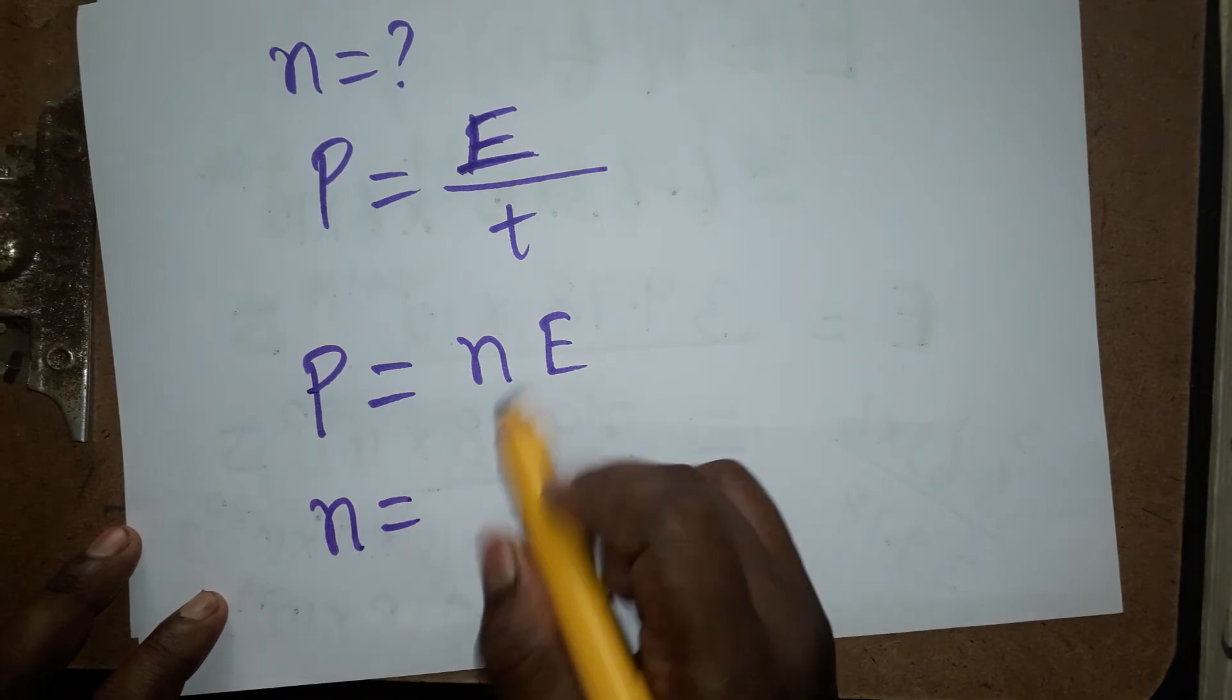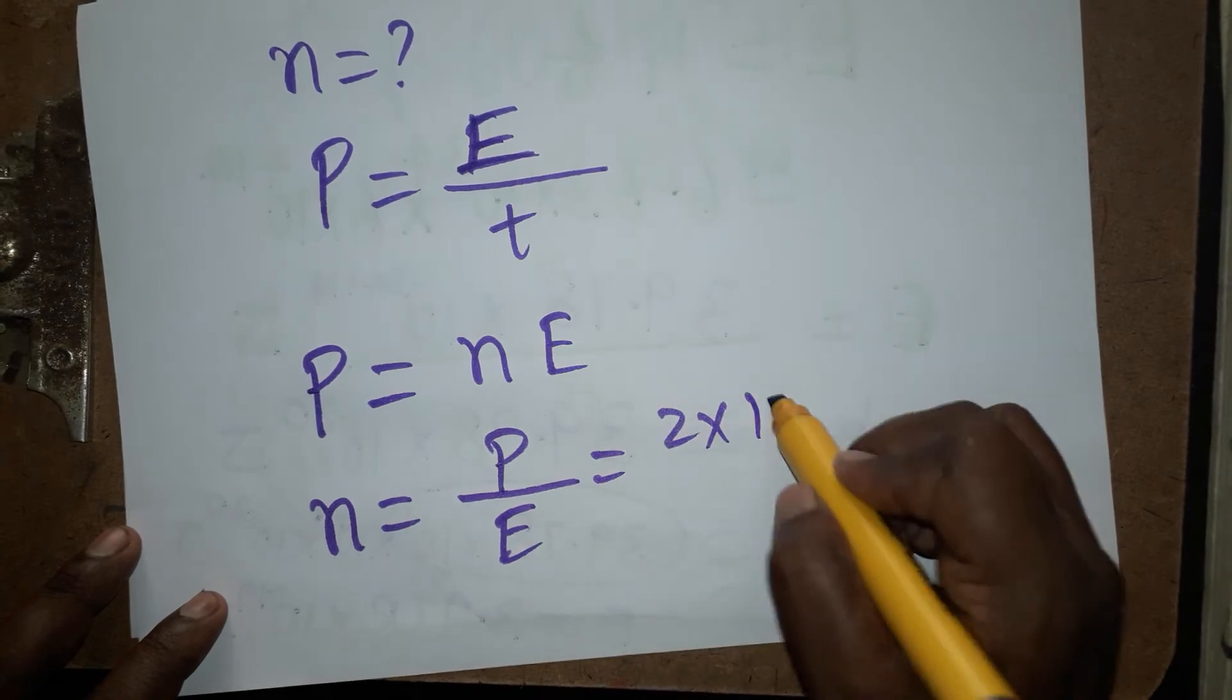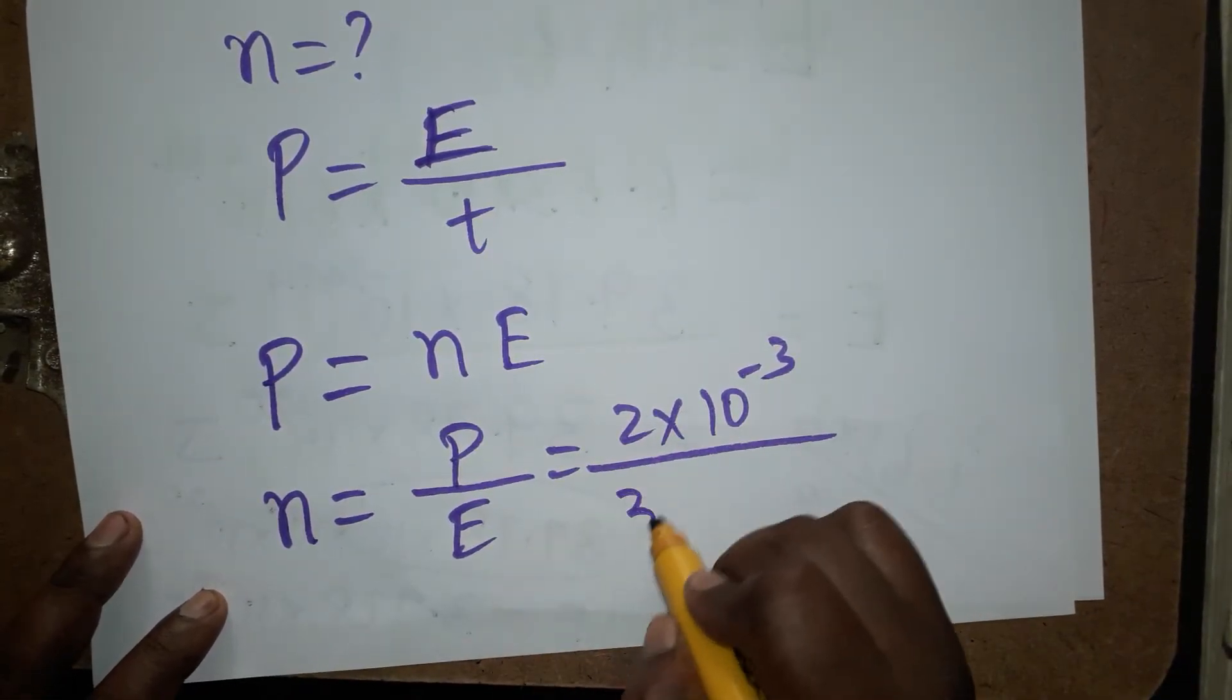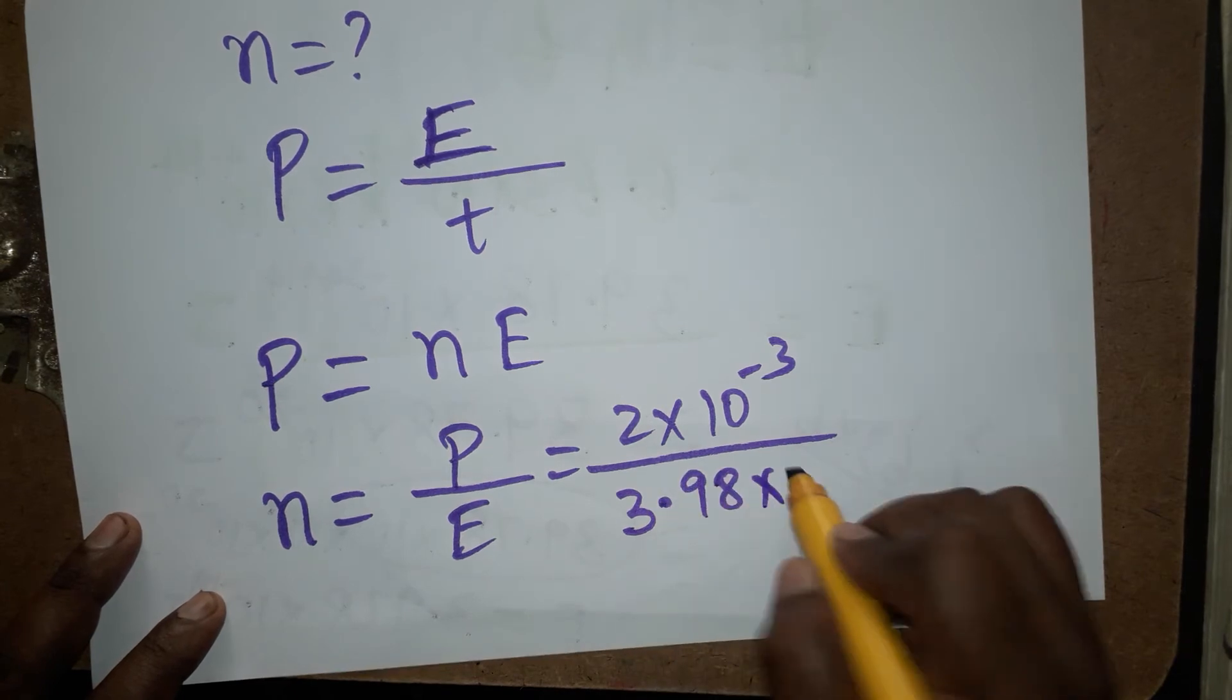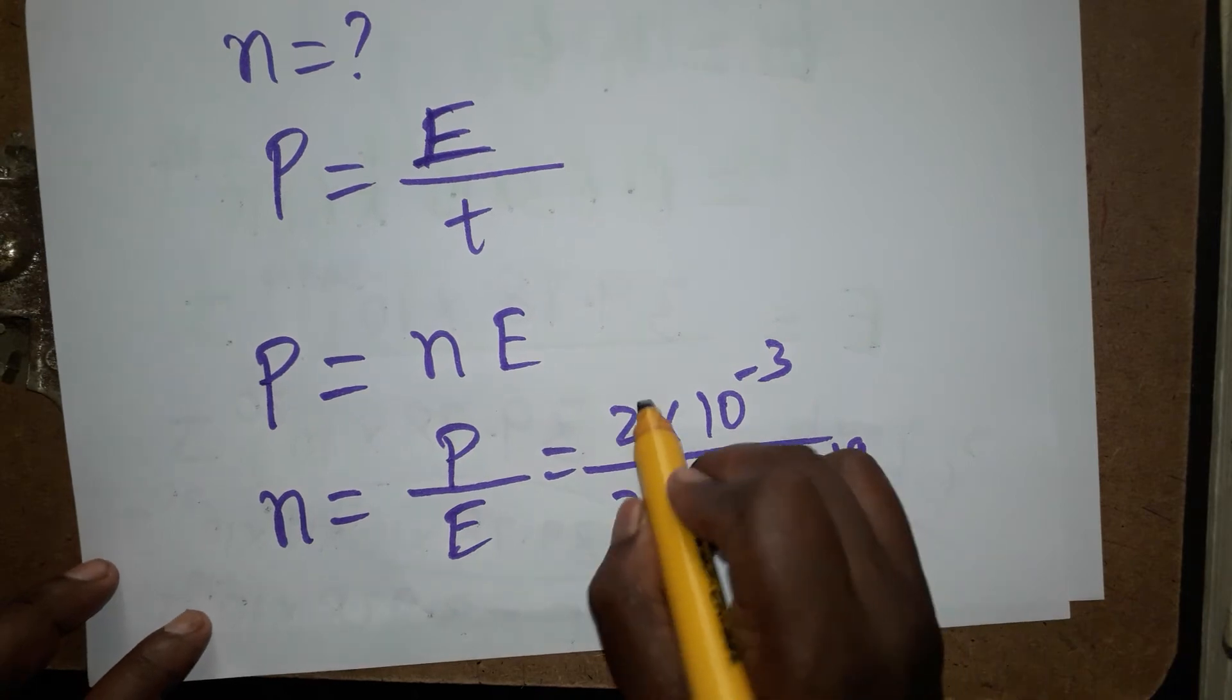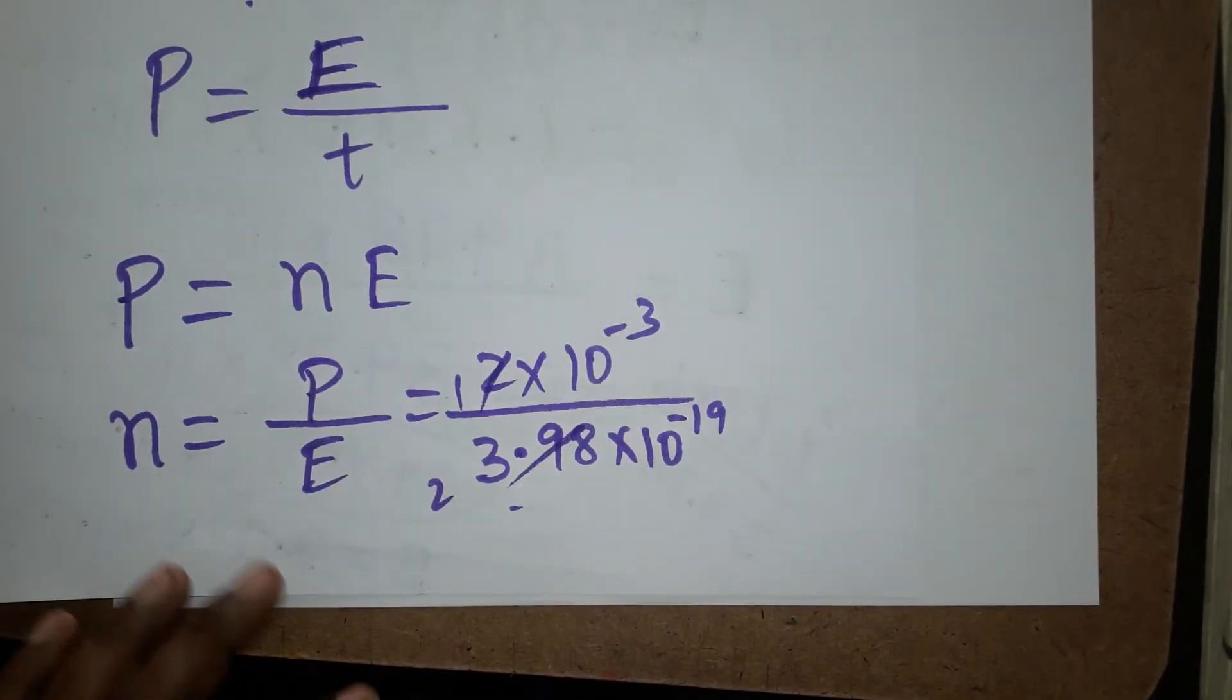They asked what is the number of photons emitting per unit time, so n equals p divided by e. Power is 2 into 10 power minus 3, energy is 3.98 into 10 power minus 19, approximately 4. This will cancel, 1 divided by 2 will be 0.5.